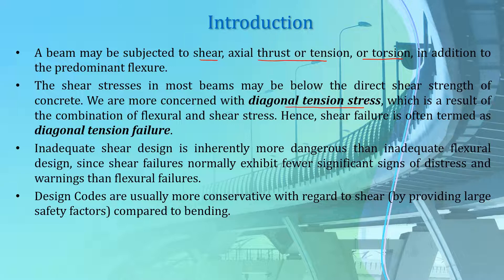Diagonal tension stress is a combination of flexural and shear stress. Shear failure is also often termed diagonal tension failure. Since concrete is rather strong towards direct shear forces, the main concern is the combination of flexural and shear stress — the diagonal tension stress. Shear design is important because shear failures are inherently brittle; they do not exhibit significant signs of distress or warnings before failure occurs.